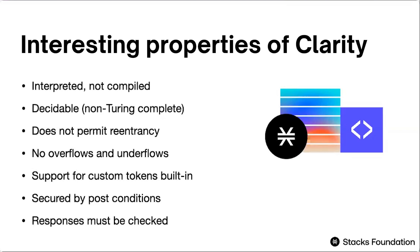Clarity also does not permit re-entrancy. We're going to talk about this in more depth when we discuss security pitfalls in a later session, but basically this means you cannot create a loop between function calls between contracts. If you have contract A calling into contract B, contract B cannot call back into contract A — that's re-entrancy, and it can lead to all sorts of issues. Re-entrancy bugs have led to a lot of token theft throughout the ecosystem on different platforms.